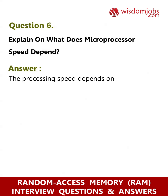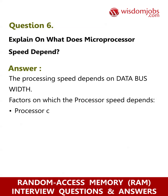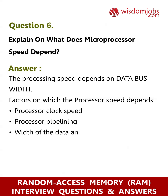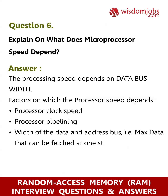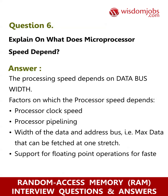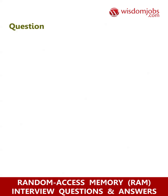Question 6: Explain what microprocessor speed depends on. Answer: The processing speed depends on data bus width. Factors on which processor speed depends include: processor clock speed, processor pipelining, width of the data and address bus — i.e., max data that can be fetched at one stretch — and support for floating point operations for faster floating point calculations.